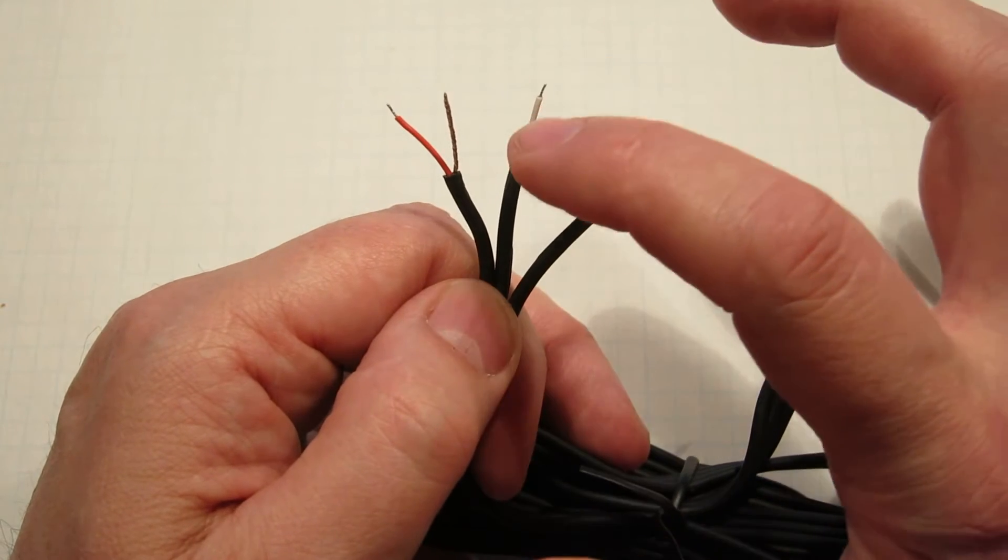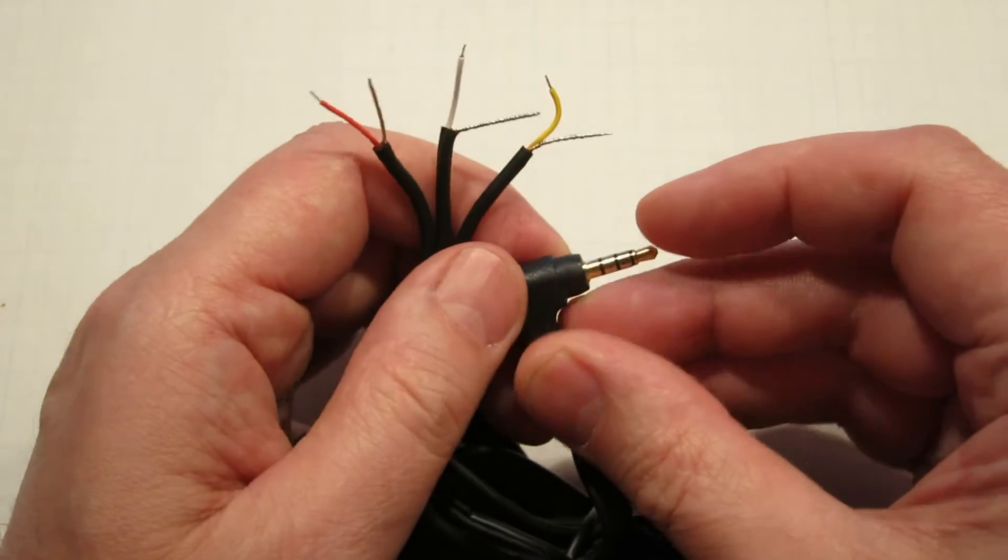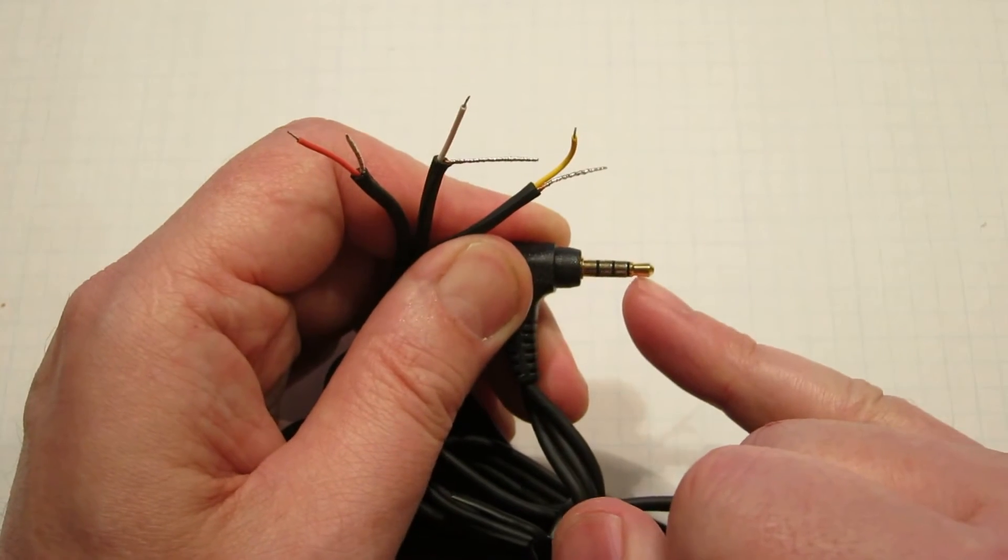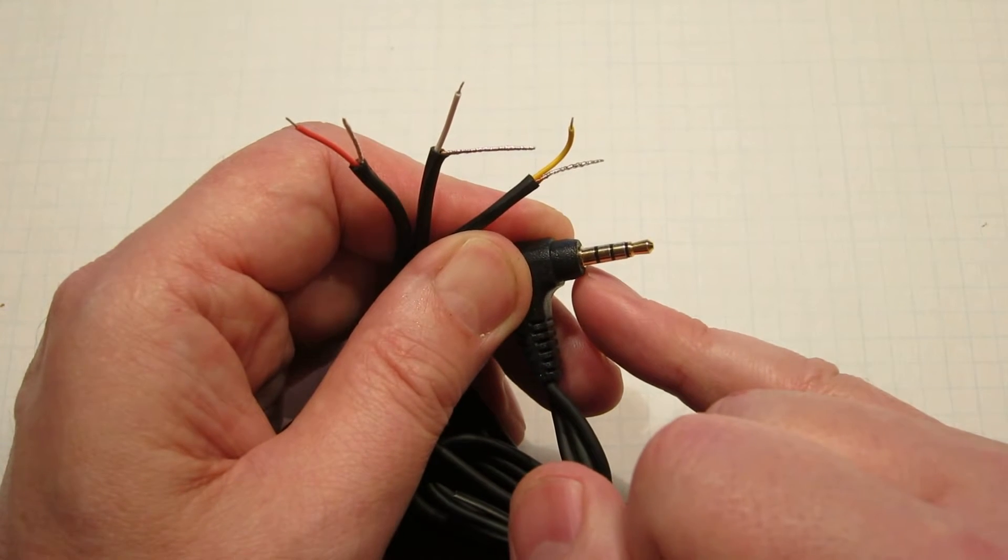To begin with we're only going to be concerned with the white and the red wire. The white wire is hooked to the tip and the red wire is hooked to the sleeve at the bottom.